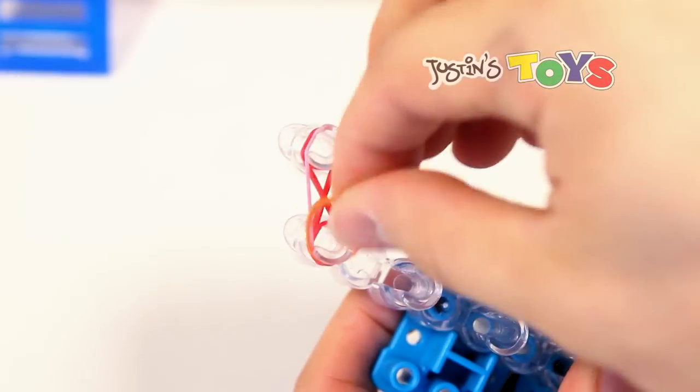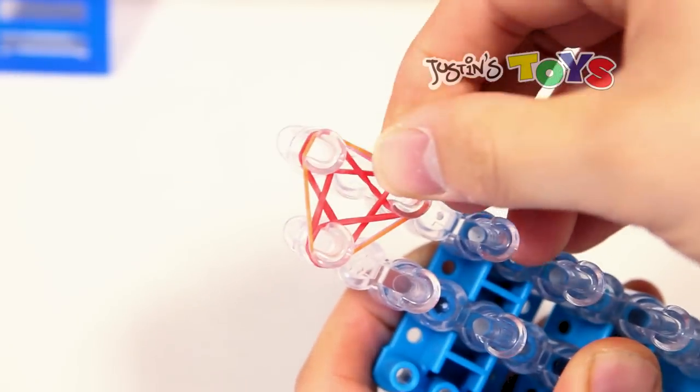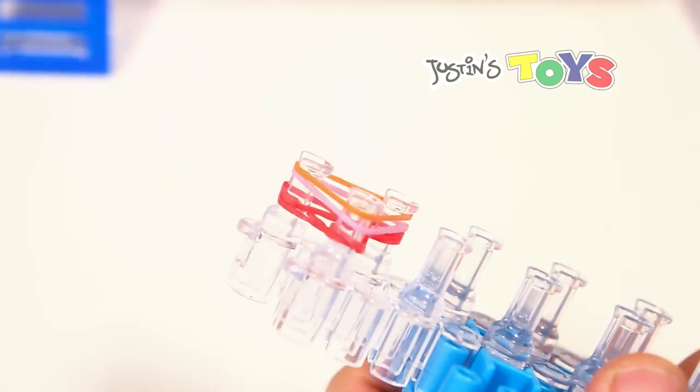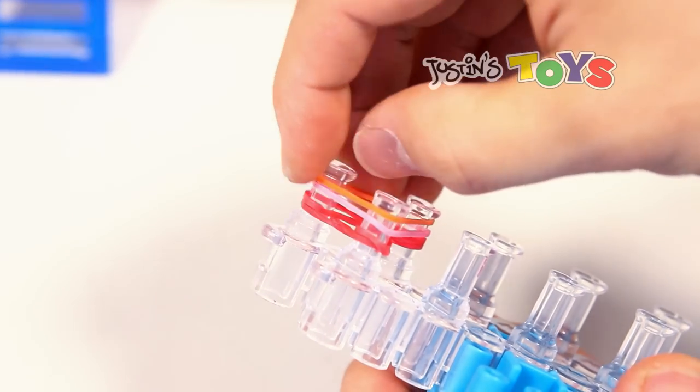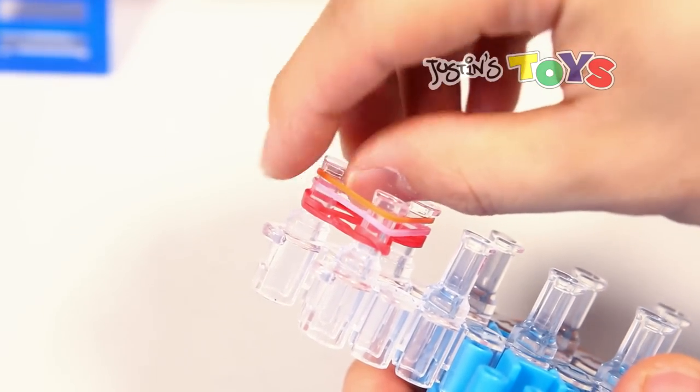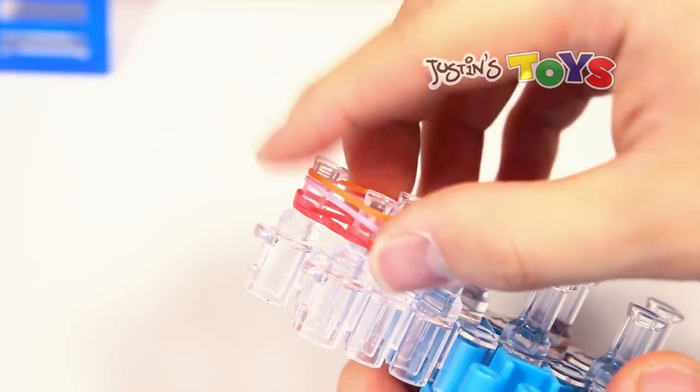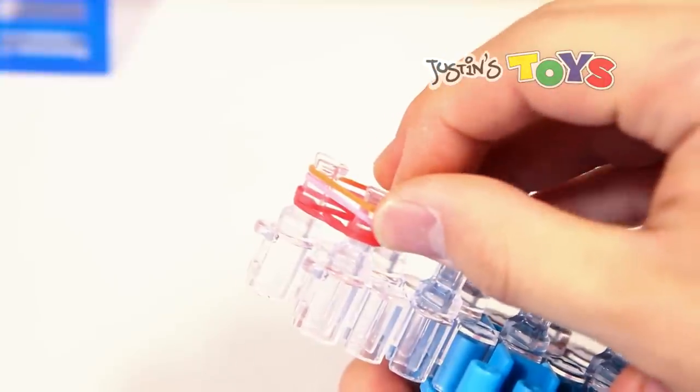And the next one. Alright, as you can see, I have three figure-eights on the bottom, and two regular triangles right on top.